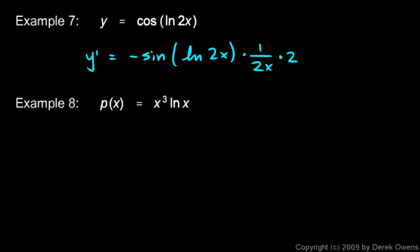This can be simplified. I'll write it as negative sine of the natural log of 2x all over x. The 2's cancelled and that's what we get.